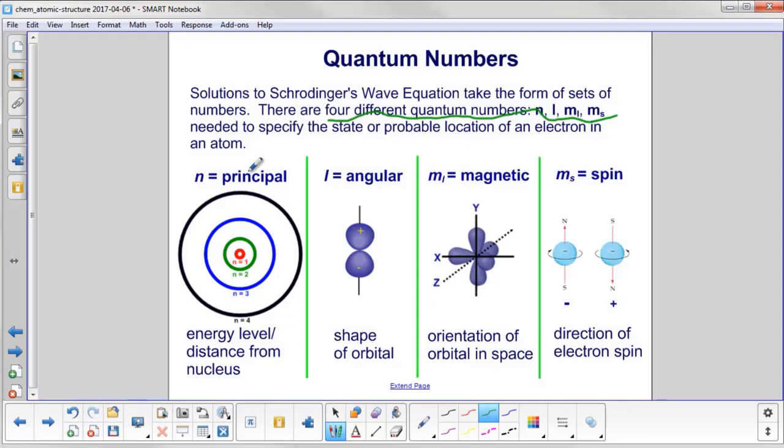The first one is n, the principal quantum number. This actually corresponds to what Bohr had with his energy levels: n equals 1, n equals 2, n equals 3, n equals 4, and so forth. Now, this isn't exactly what it looks like, but it gives you a good idea. It's nice that Bohr's model could evolve into this quantum mechanical framework with Schrödinger.